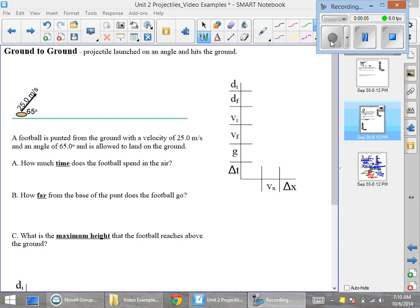This is a video example on how to do a ground-to-ground projectile problem. Ground-to-ground is where the projectile is launched on an angle and then travels through the air, curves with motion, and hits the ground again. Our projectile here is a football.